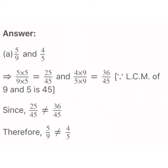The first one is 5 by 9 and 4 by 5. Here we will first make the denominators the same — that means we will find a common multiple for 9 and 5, which is 45. You can also find the LCM of 9 and 5, which is also 45.